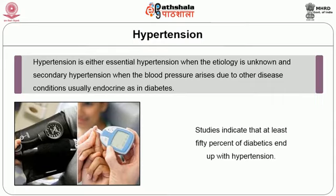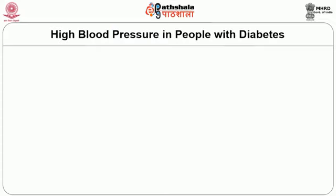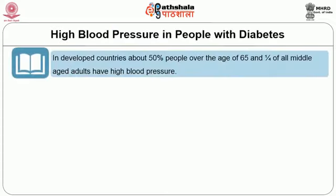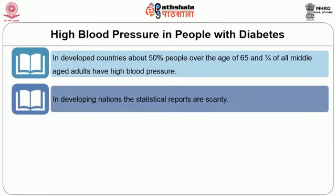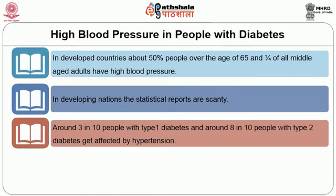Studies indicate that at least 50% of diabetics end up with hypertension. In developed countries, about 50% of people over the age of 65 and one-fourth of all middle-aged adults have high blood pressure. In developing nations, the statistical reports are scanty. Around 3 in 10 people with type 1 diabetes and around 8 in 10 people with type 2 diabetes get affected by hypertension.